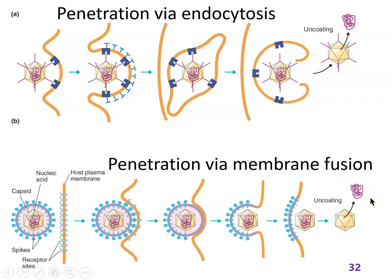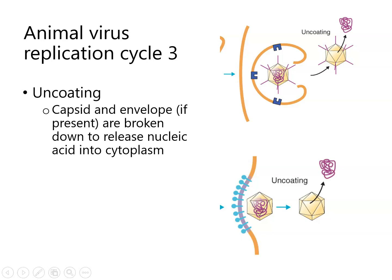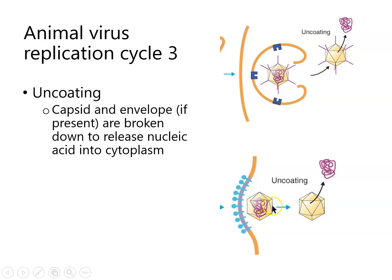Many viruses can do both of these entry methods, and whichever happens first seems to be what they use. Influenza can do both, and SARS-CoV-2 can do both — those are the two viruses we'll look at in most detail. Uncoating is simply getting the nucleic acid out of the capsid.